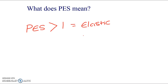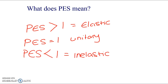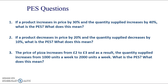If PES is above 1, it's elastic — so 1.something, 2.something, 3.something and so on. If it equals 1, it's unitary or unit elastic. If it's below 1, it's inelastic — starting with 0.something — and as noted it should always be a positive number. So let's look at a few questions: if a product increases in price by 30% and the quantity supplied increases by 40%, what is the PES and what does this mean?